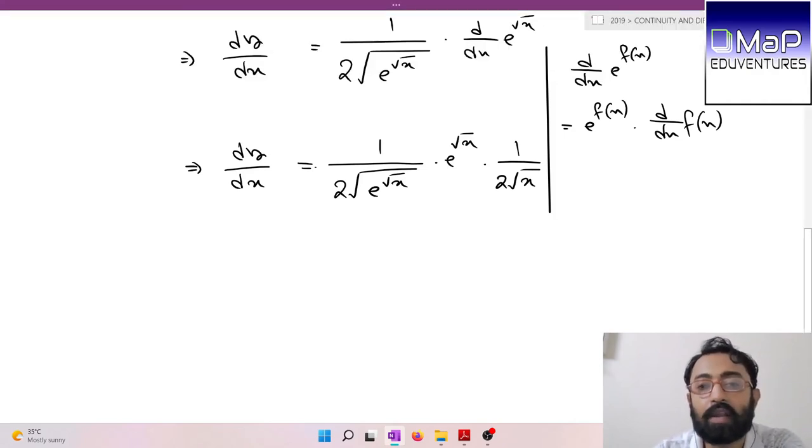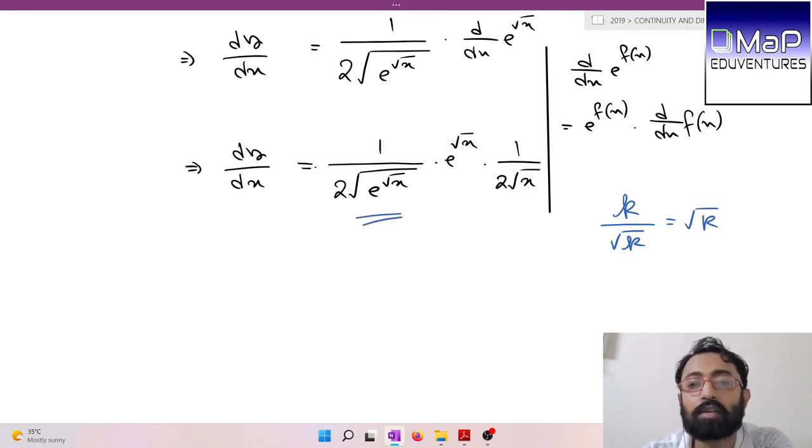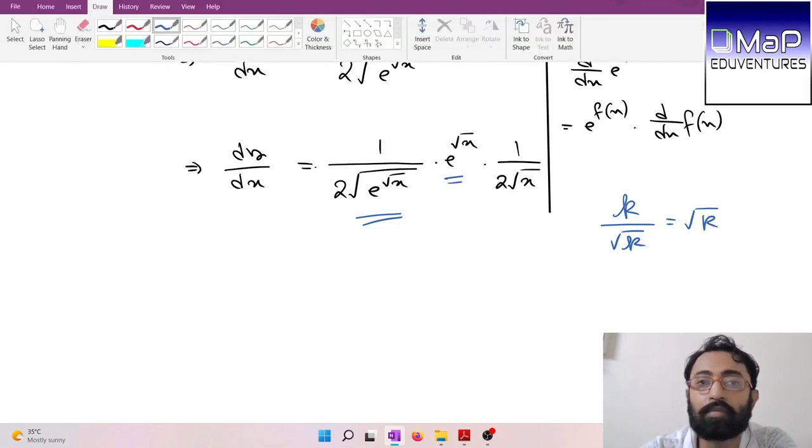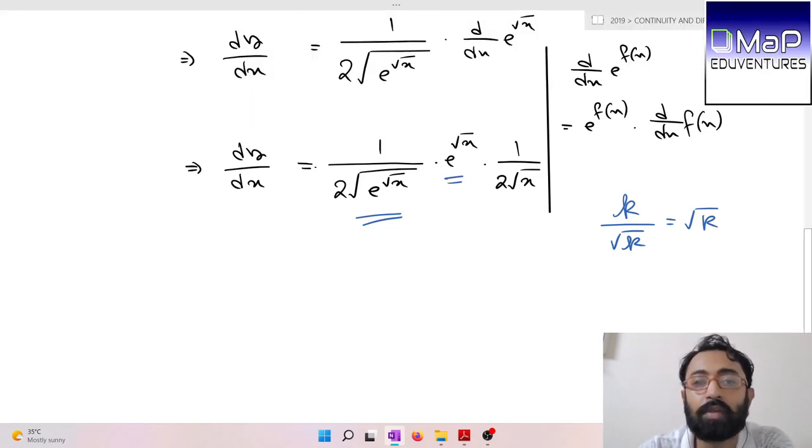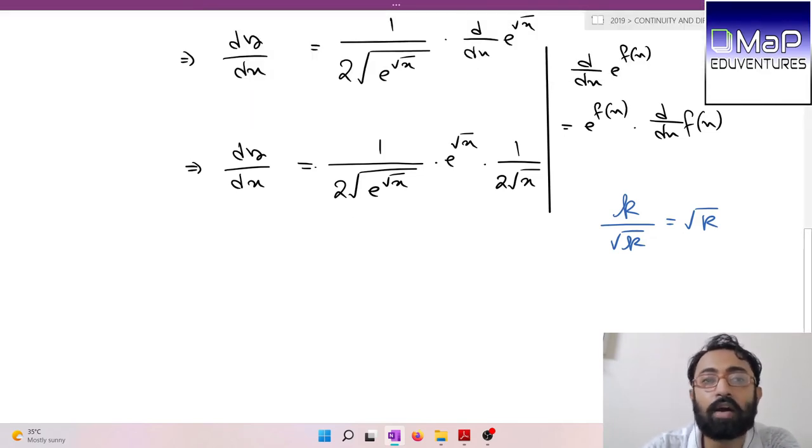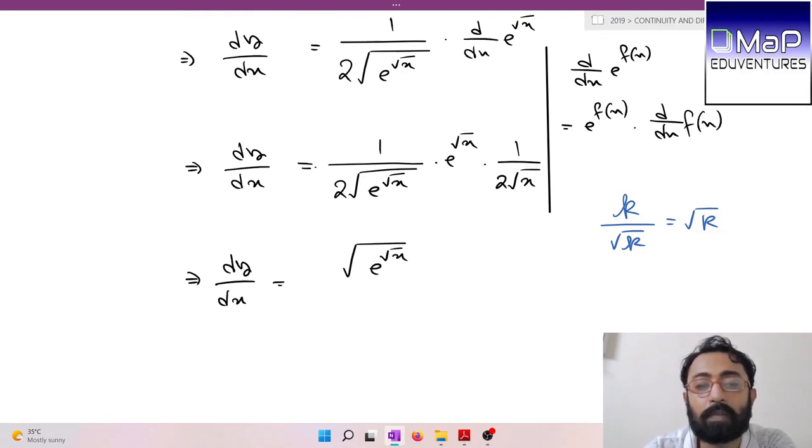Almost done because right-hand side differentiation is complete. Now we can cancel: √(e^√x) and e^√x cancel to give √(e^√x). Finally, dy/dx = √(e^√x)/(4√x).